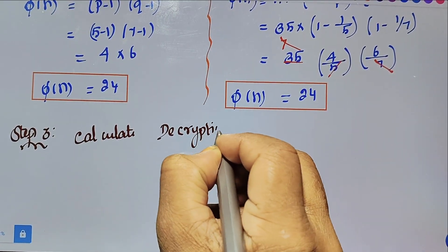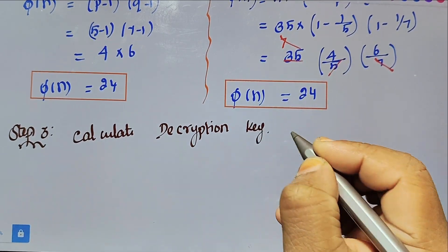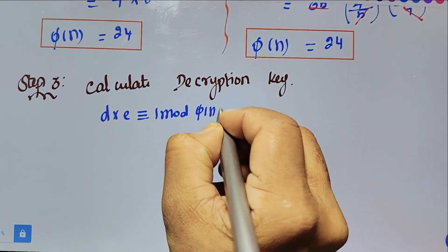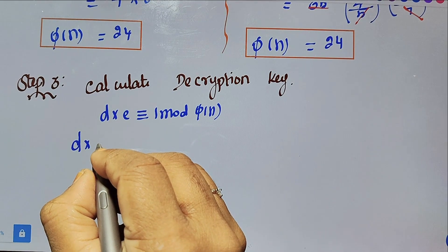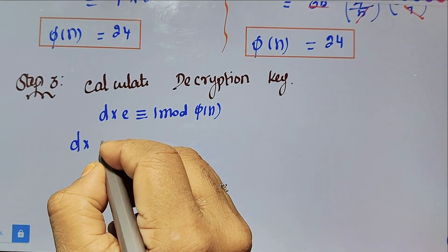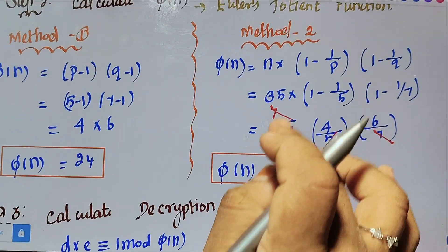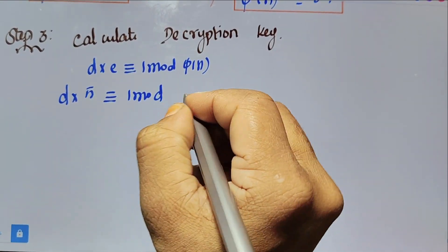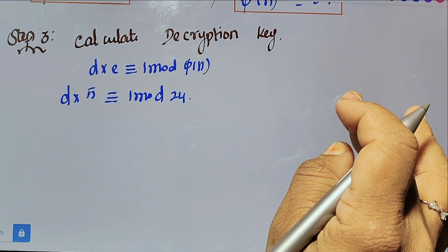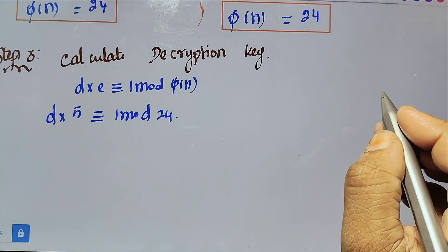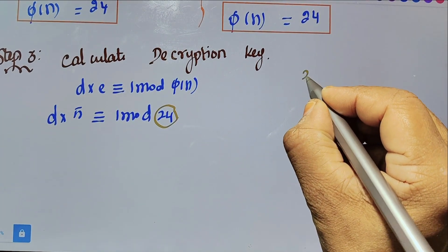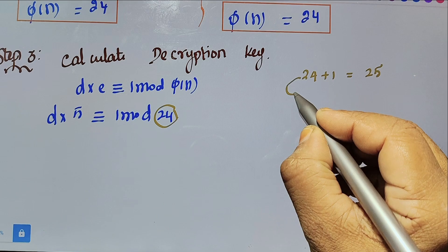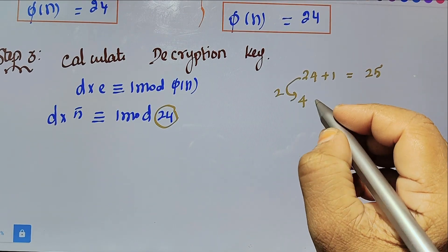Step 3: Calculate the decryption key. The formula is d into e congruent to 1 mod phi of n. The value d is unknown. The value e is given as 5 and phi of n is 24. So we need d such that d into 5 congruent to 1 mod 24. To find d, we compute multiples of 24 plus 1: 24 plus 1 is 25, 48 plus 1 is 49.